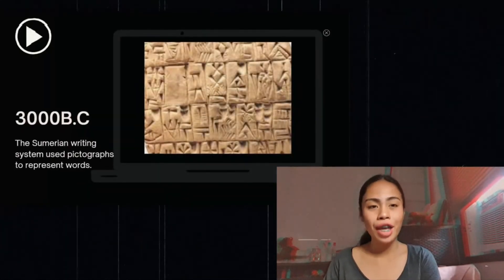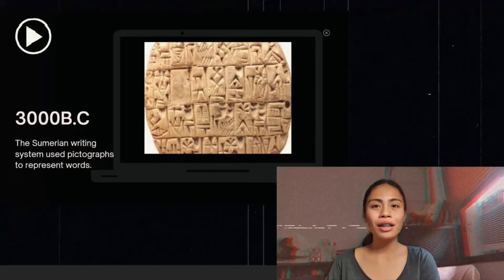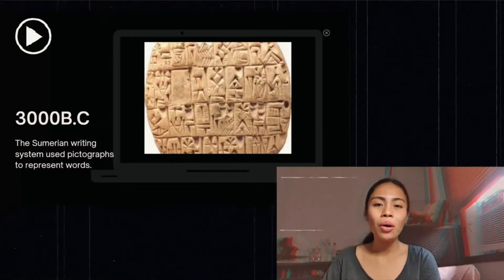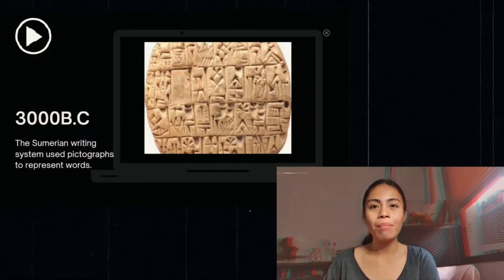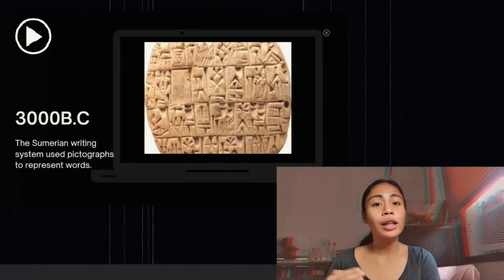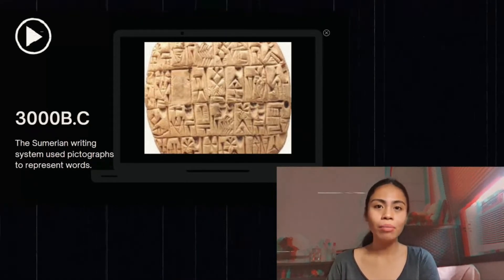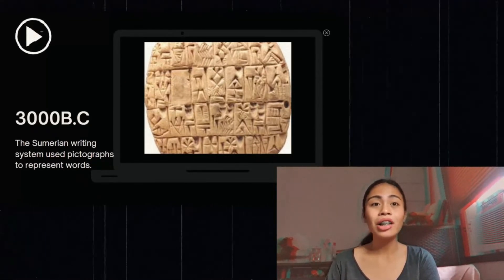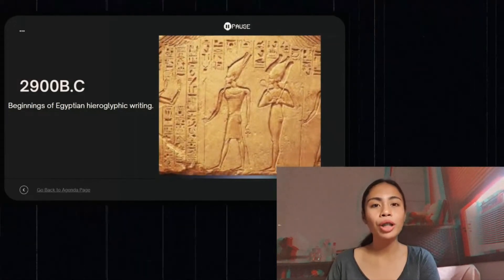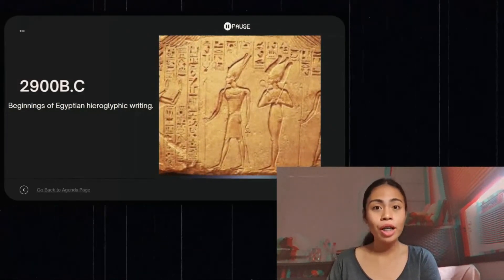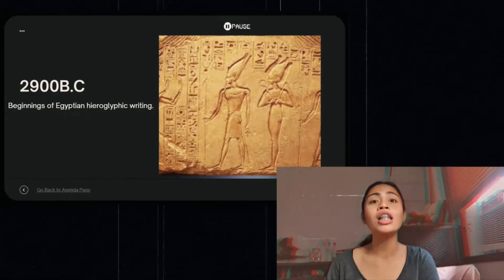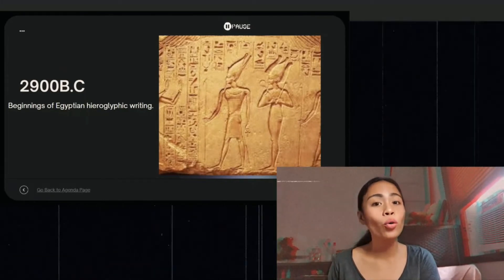The History and the Emergence of the Information Age. First, in 3000 BC, the Information Age originated when the Sumerians developed a writing system using pictographs and other symbols. They used it to represent words for their trading goods and livestock on clay tablets, known as Sumerian Cuneiform. Next, in 2900 BC, the Beginnings of Egyptian Hieroglyphic Writing. The Egyptian Hieroglyphic Script was one of the writing systems used by ancient Egyptians to represent their own language.